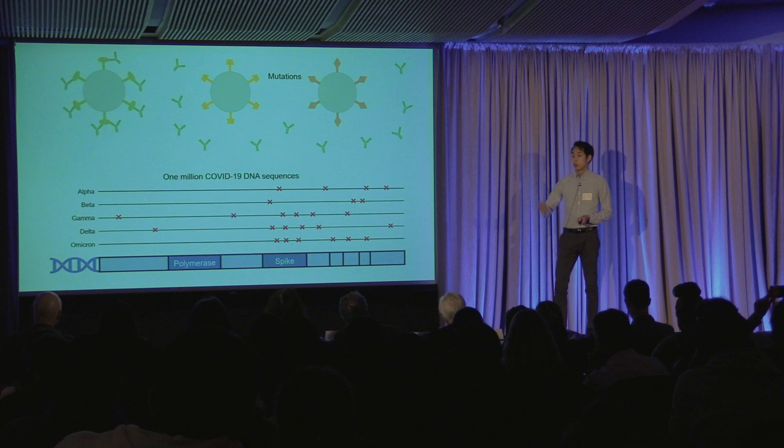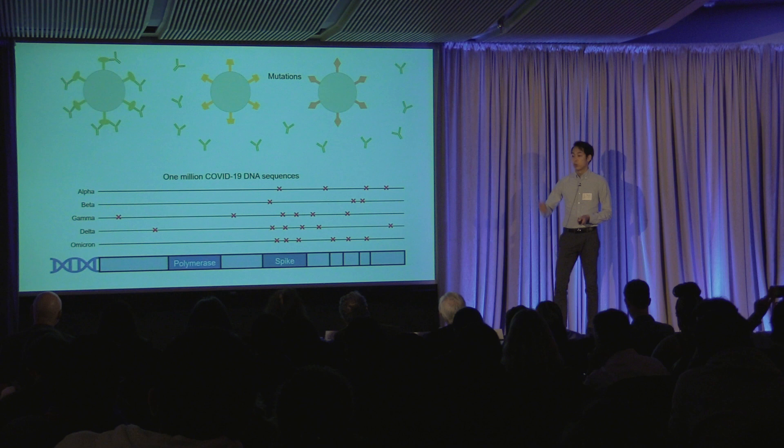I looked at other major coronaviruses responsible for SARS, MERS, and the common cold, and found the same exact thing in every single one of them, suggesting that the polymerase is highly unlikely to mutate even after years and years of evolution.